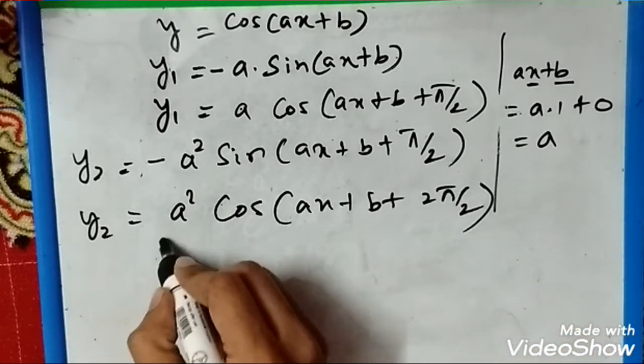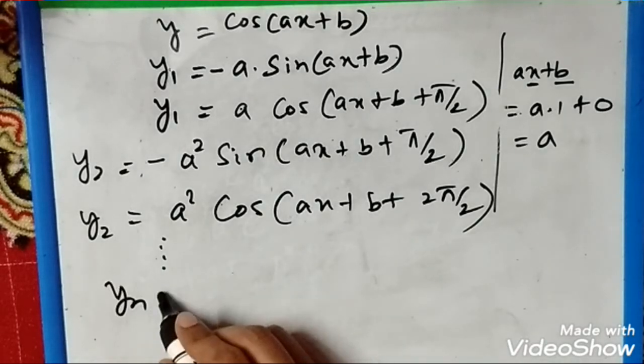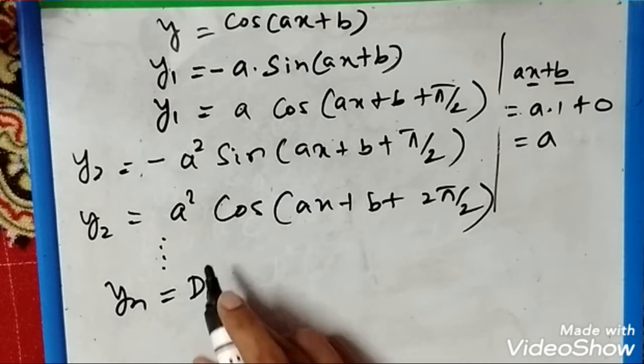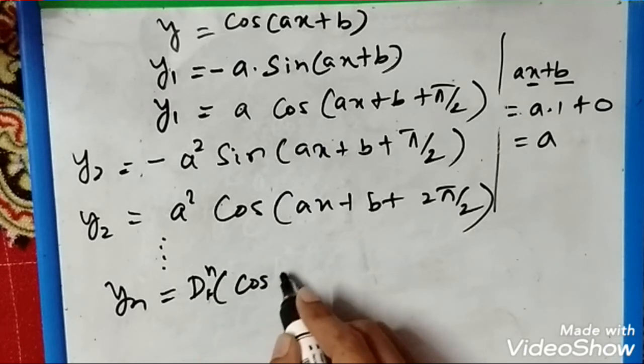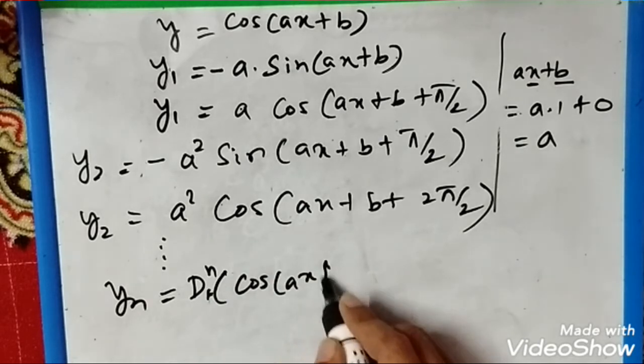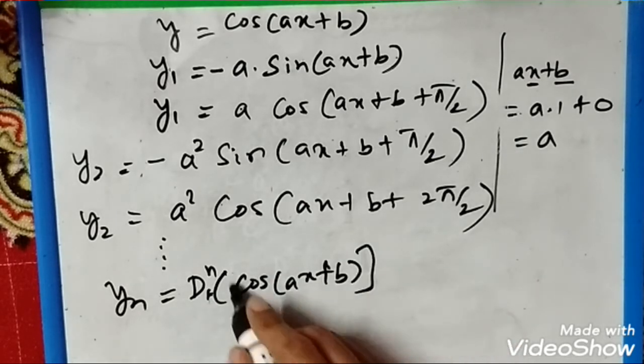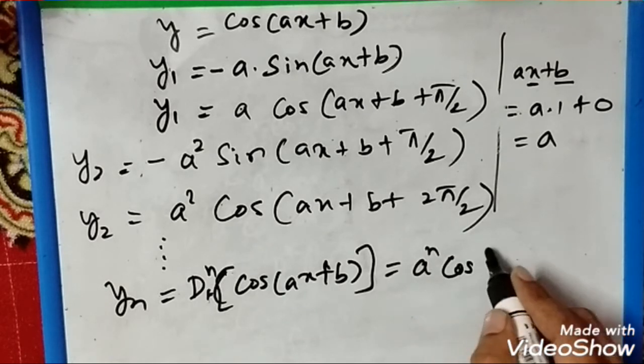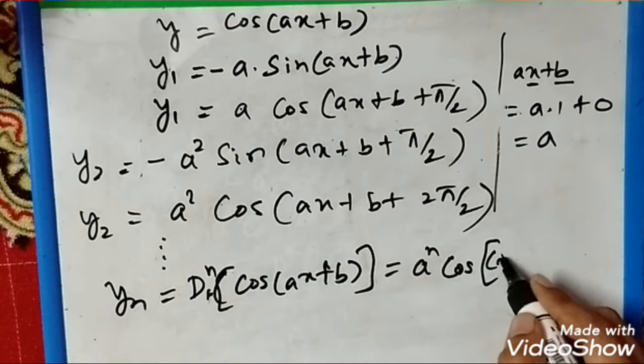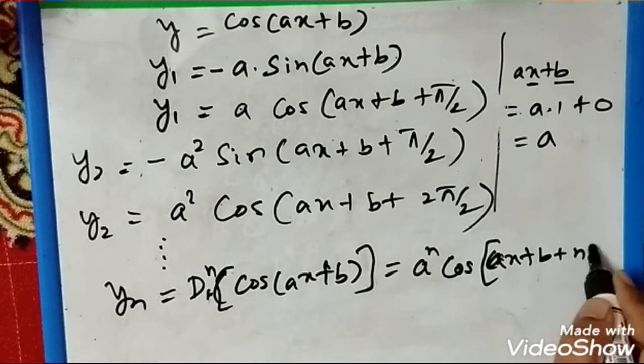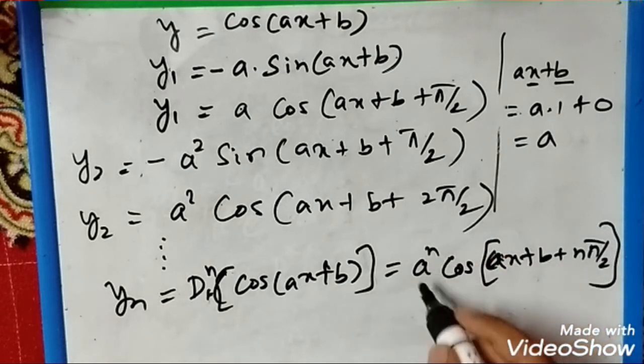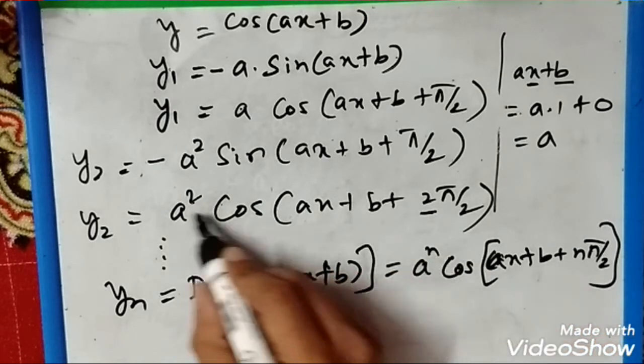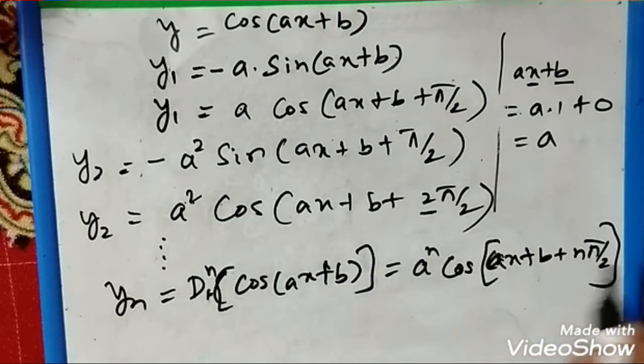You will get yn equals the nth differentiation of cos(ax + b), which equals a^n cos(ax + b + nπ/2). As we go on increasing, this becomes n: a raised to n, and the phase shift becomes nπ/2.